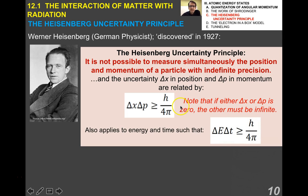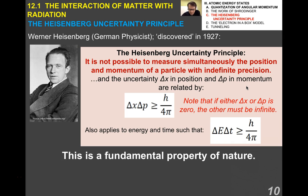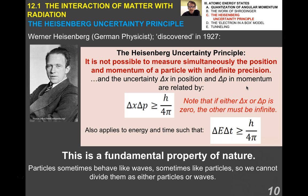This also applies to energy and time such that delta E and delta T is greater than or equal to h over 4 pi. Both of these equations are given to you in your data booklet. Now, why is this?